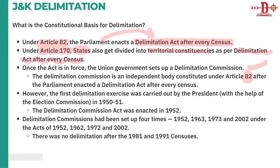The first delimitation exercise was carried out by the President with the help of the Election Commission in 1950-51. Then the Delimitation Commission Act was enacted in 1952. Until now, the delimitation commission has been set up four times: 1952, 1963, 1973, and 2002.